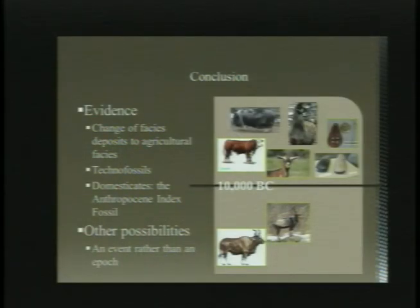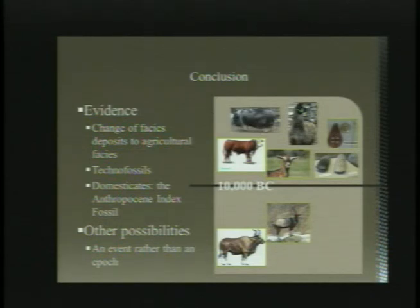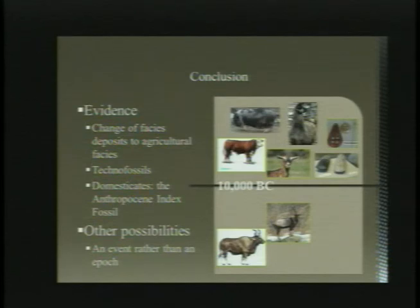Over two million years from now, and perhaps even beyond, evidence of the beginning of the Anthropocene will be identifiable in geologic strata. Future geologists will be able to clearly mark new strata based upon the first occurrences of sudden facies changes from natural facies deposits to agricultural facies, the beginnings of technofossils including stone and metallic artifacts, and the emergence of domesticates as the Anthropocene index fossil. If humans continue on their current destructive path, they may not last long enough for there to be a new epoch and may instead just be a geologic event.